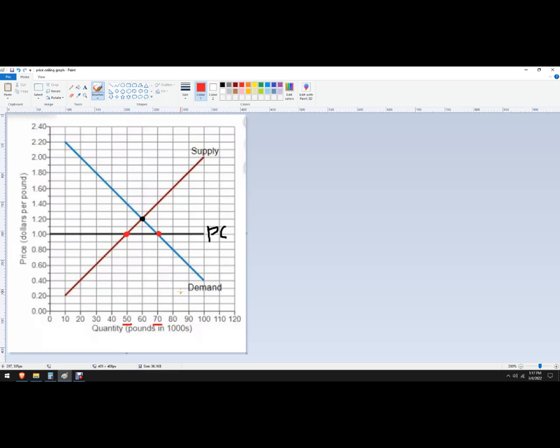What we want to do is figure out the deadweight loss. Before we do, the shortage here would be 20. That's the additional units that the consumers will want to buy relative to the number of units that the sellers want to sell. And then for the deadweight loss,